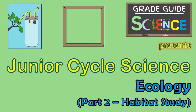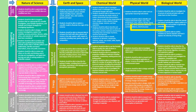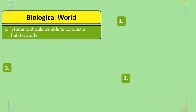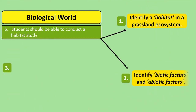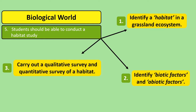Hi and welcome back to GradeGuide. This revision video on ecology is directed towards students completing the junior cycle science exam as part of the Irish curriculum. Based off the NCCA learning outcomes, three things we'll be revising in this video are what a habitat is and identifying biotic and abiotic factors within one. We'll also revise how to carry out a qualitative and quantitative study of a habitat.